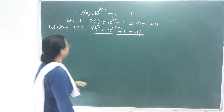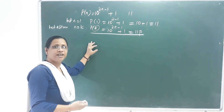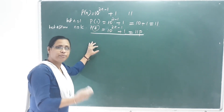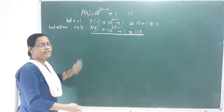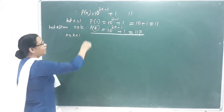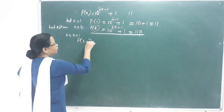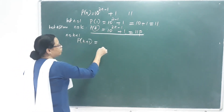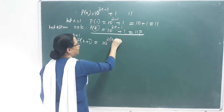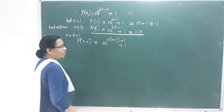Third step: we shall prove that P of N is true for n equal to k plus 1. Then P of k plus 1 equals 10 raised to 2 into k plus 1, minus 1 plus 1.